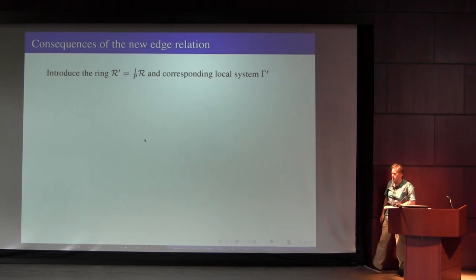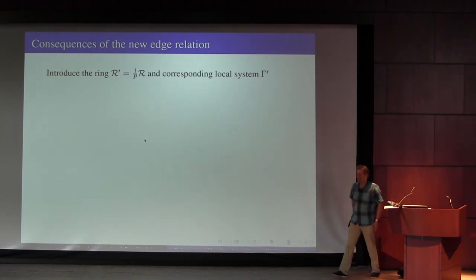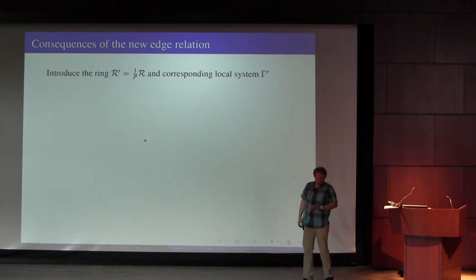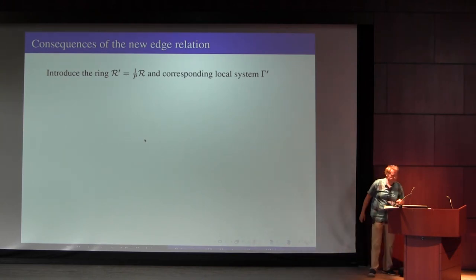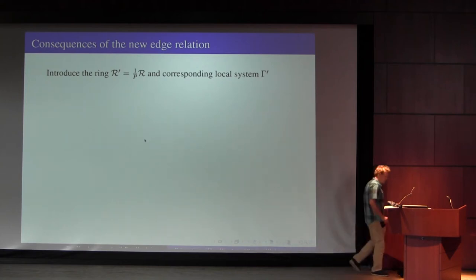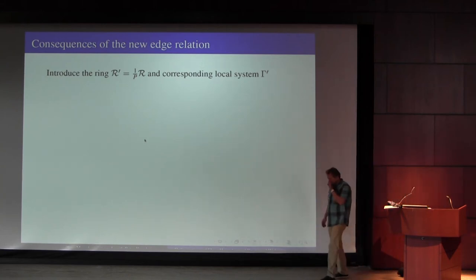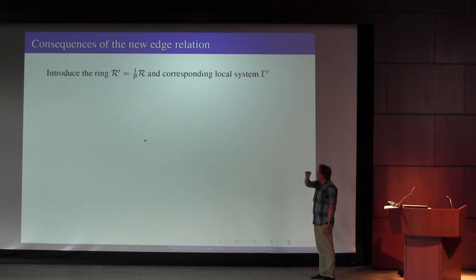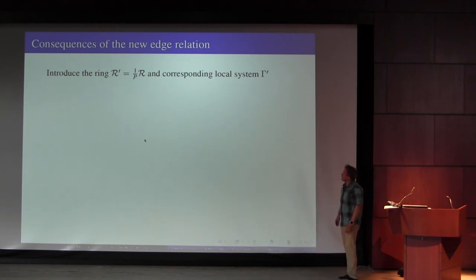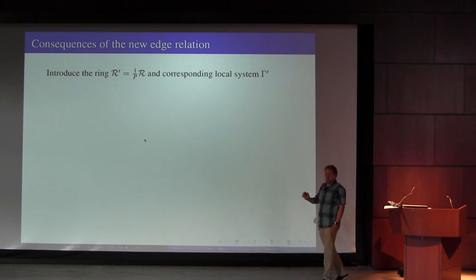So what I want to do is spell out some consequences of this new edge relation — quite a little story happens. First, we're going to work with the ring where we allow ourselves to divide by this polynomial p. So R-prime is the polynomials we would use divided by p, and then there's a corresponding local coefficient system.